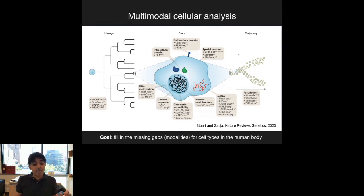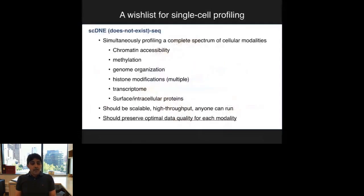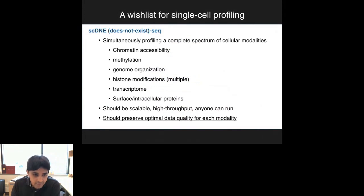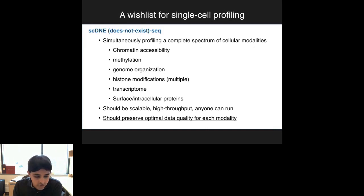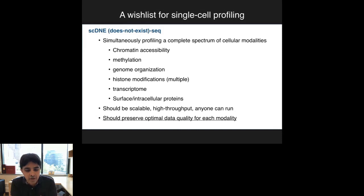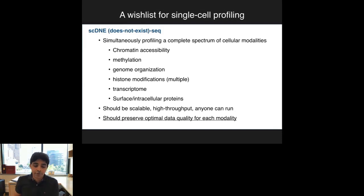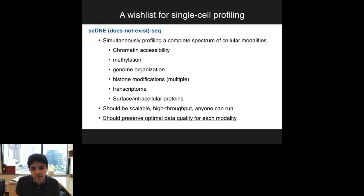One of the goals broadly for my group is to take tools and resources developed for single-cell RNA-seq and fill in information on missing modalities, so we have not just a gene expression-focused view of the cell but a more holistic view of its overall molecular and phenotypic state. To do that, we need to measure information from other modalities and integrate them together. What we would really love as a community is a technology that simultaneously profiles a complete spectrum of cellular modalities—chromatin accessibility, DNA methylation, genome organization like Hi-C, histone modifications, the transcriptome, and abundances of surface and intracellular proteins—that is scalable, high-throughput, and preserves optimal data quality for each modality. Since this technology doesn't yet exist, we need computational alternatives.